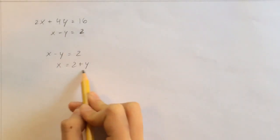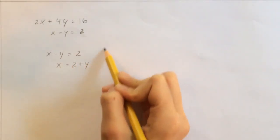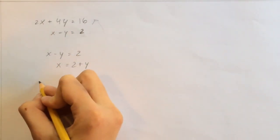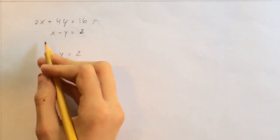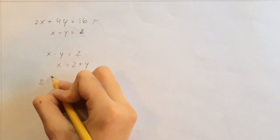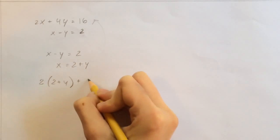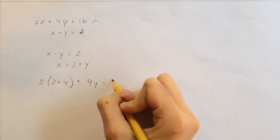So now that we have this, we can plug this back into the other formula so that we have everything in terms of y. So that would be 2 times x, and x is 2 plus y, so 2 times 2 plus y, plus 4y equals 16.